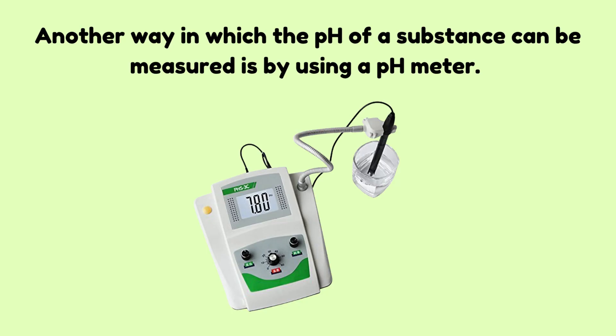Another way in which the pH of a substance can be measured is by using a pH meter. This is a pH meter.